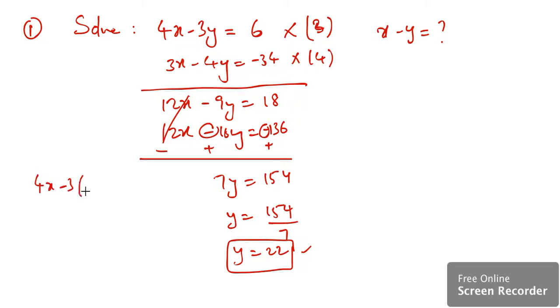So we'll do that: 4x minus 3 times 22 equals 6. 4x minus 66 which is 3 times 22. If you shift it or add 66 to both sides, you're going to get 72. x is equal to 72 over 4, so x will be 18.